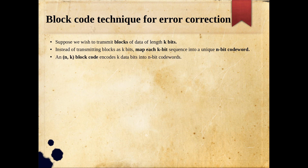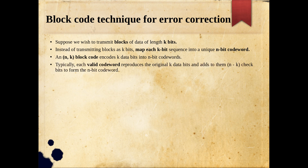When we map a k-bit block into an n-bit codeword, we call it an (n, k) block code. Here n is the codeword length and k is the original message block length. Typically, each valid codeword reproduces the original k data bits and appends n minus k check bits to form the n-bit codeword. So n minus k is our redundant or check bits, which help us with both error detection and correction.